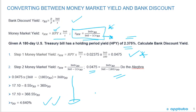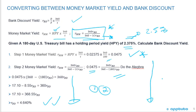I always say do it once, practice it, do it again. Sometimes I'll change the numbers — change the holding period yield to 2.5% and change the number of days from 180 to 150, and go through all the calculations again. The best way to get good at things and memorize them is through repetition. When I look at a question like this, I redo the calculations a few times.